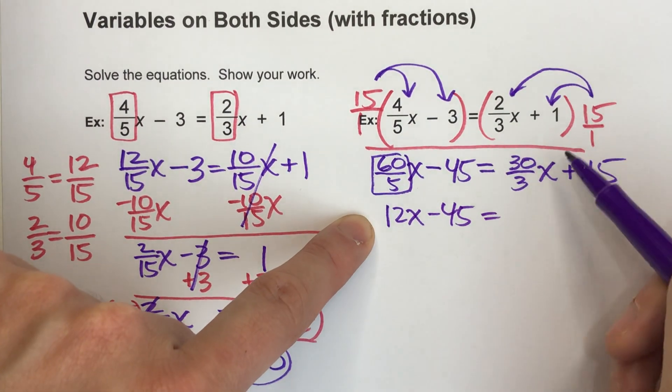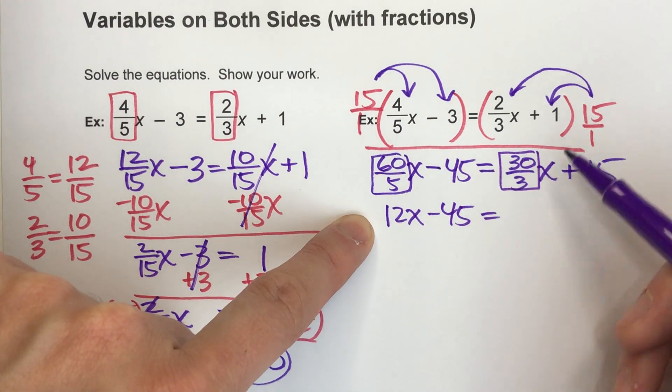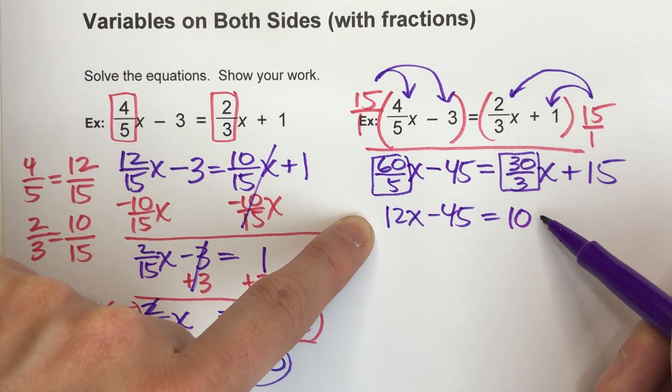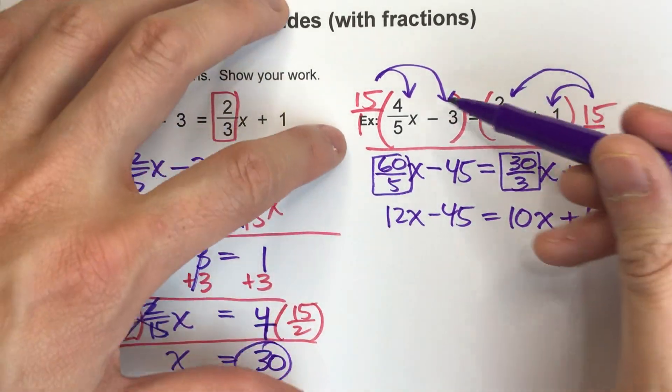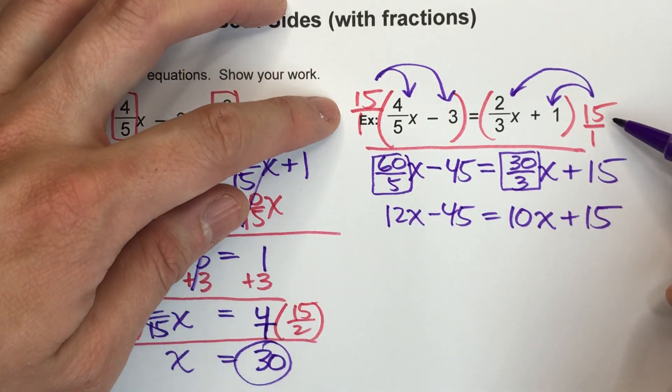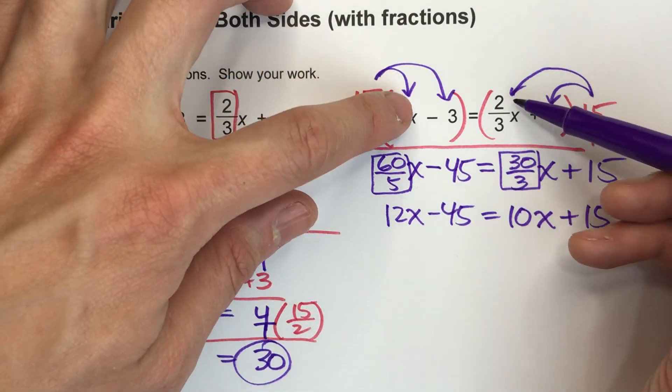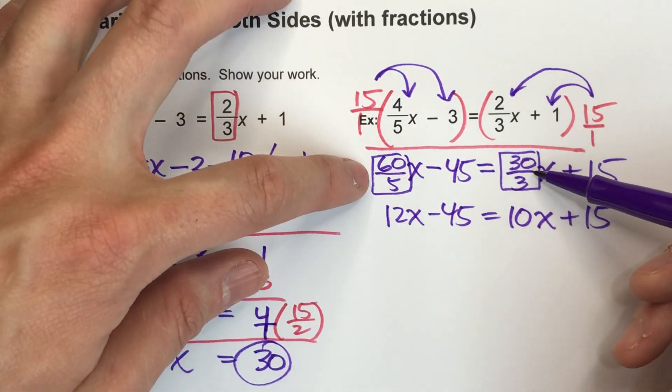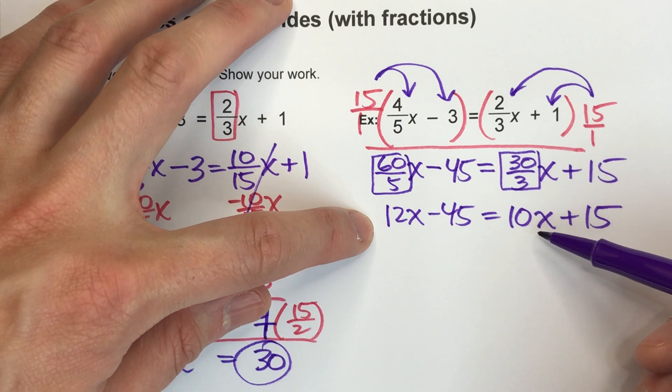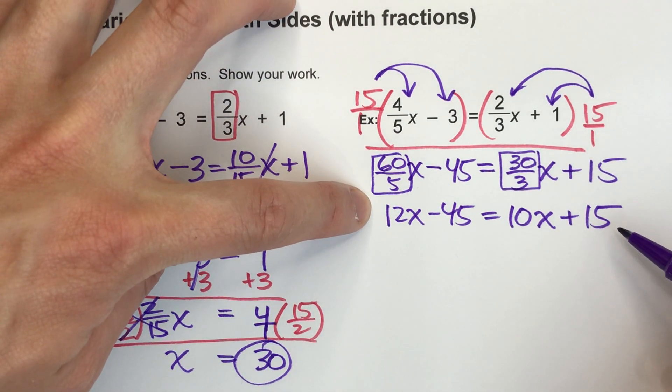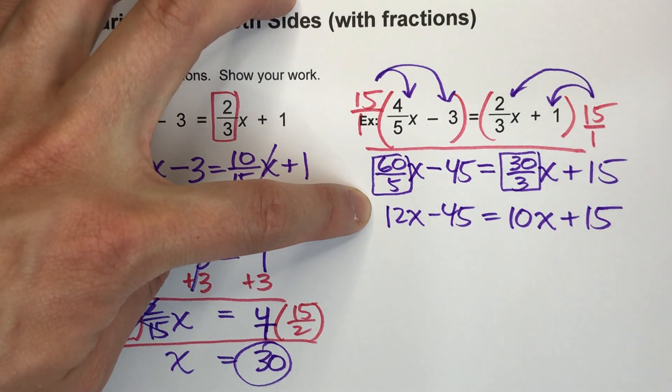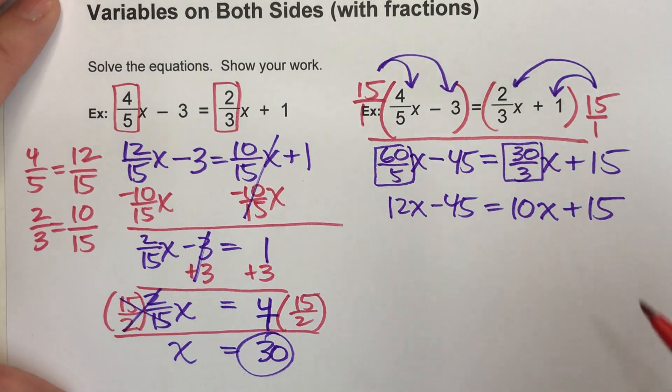And on the other side, 30 divided by 3, that's also just a whole number. 30 divided by 3 is just 10. So this is 10x + 15. So by multiplying both sides by the common denominator, it ends up making the fractions into fractions that can just turn into whole numbers. And this algebra equation is the one we're going to solve to get our answer.